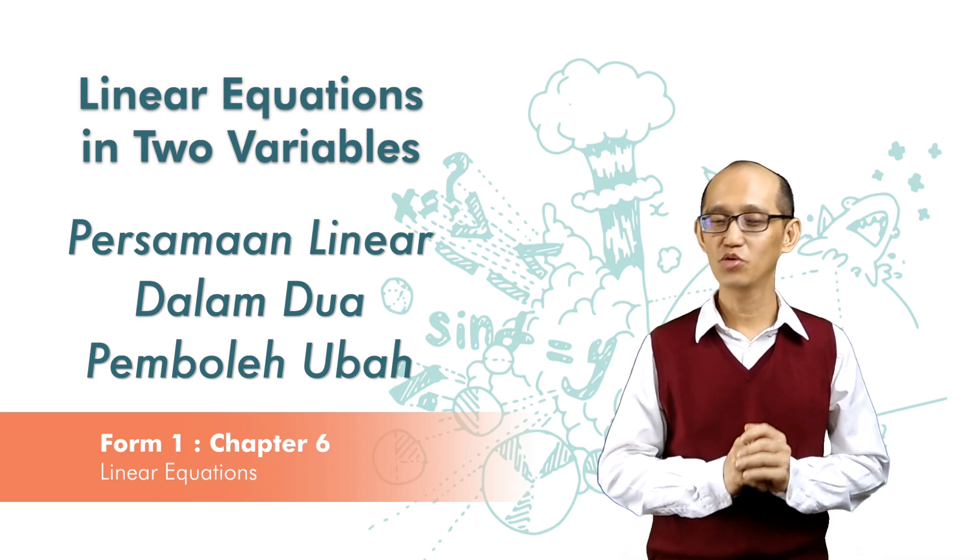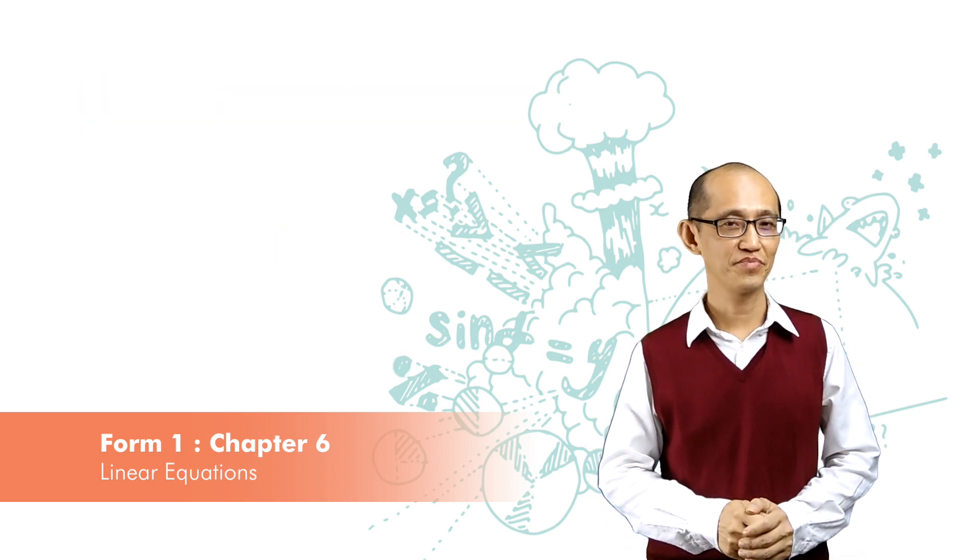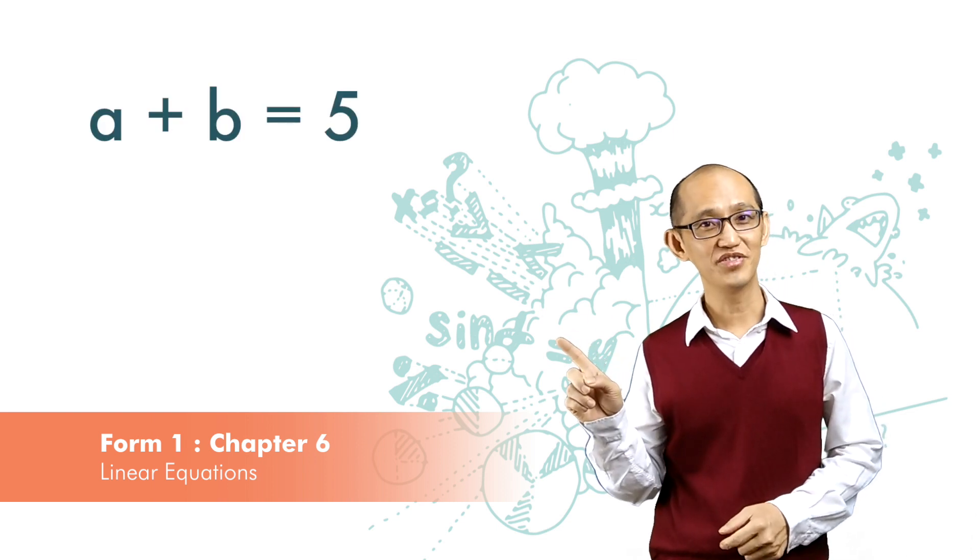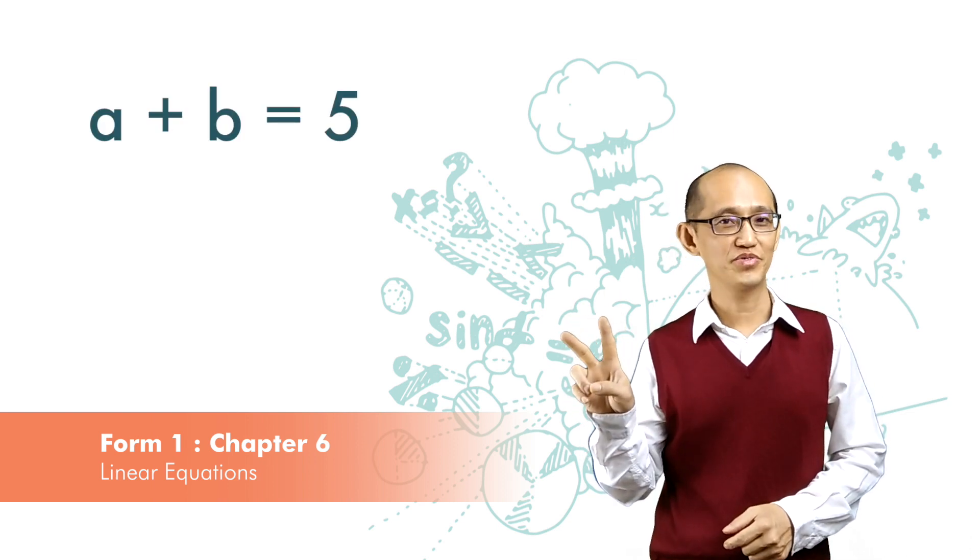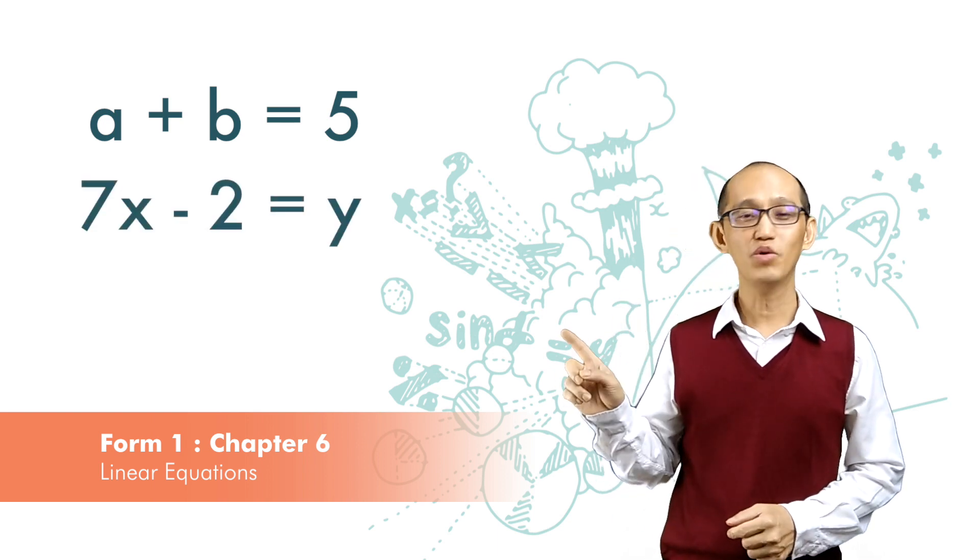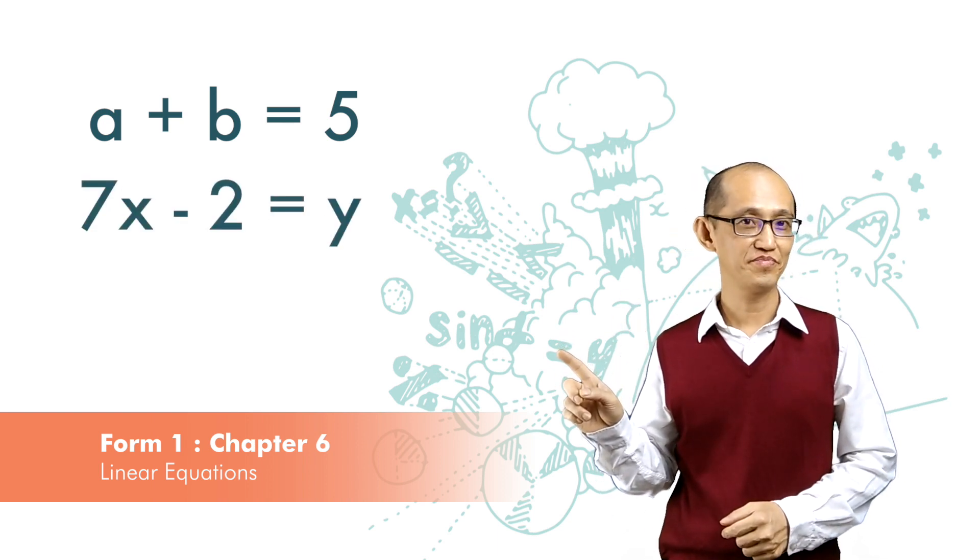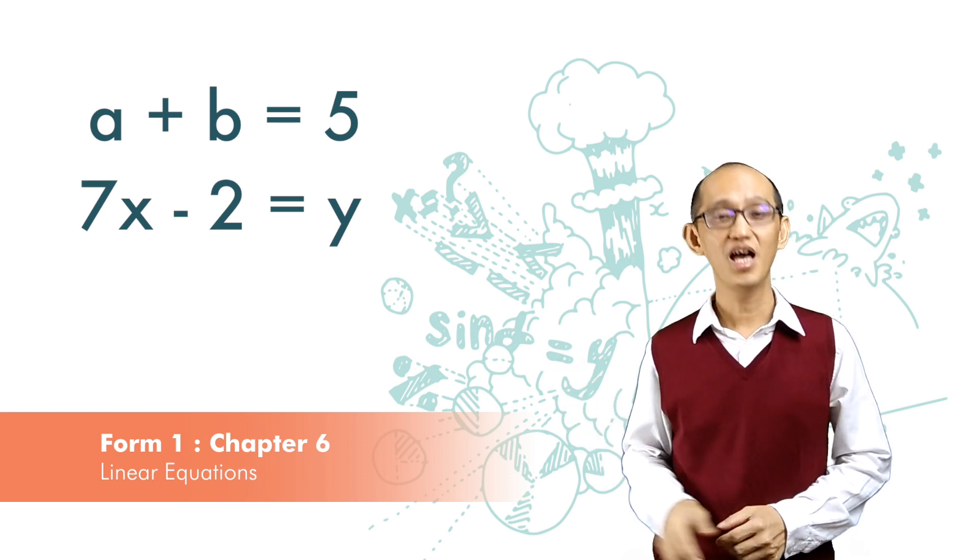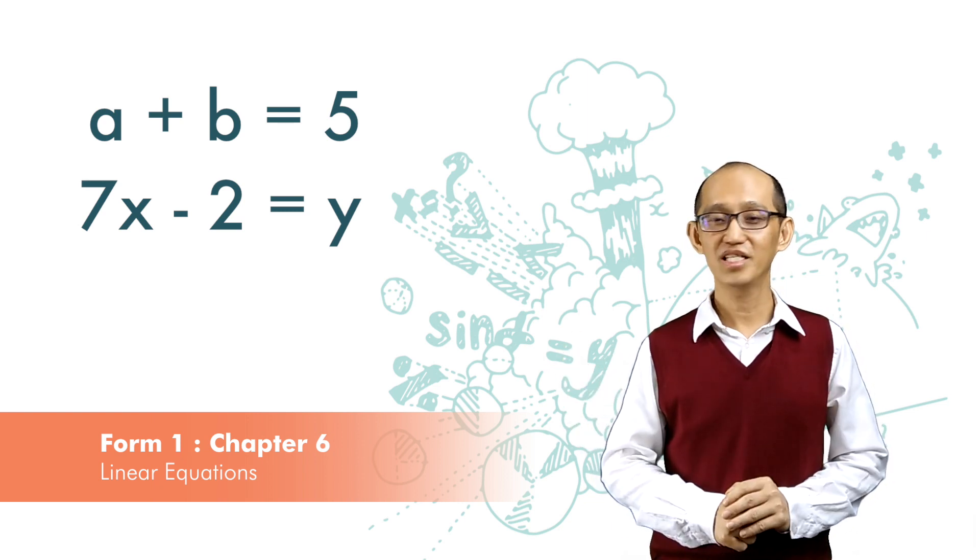So what is a linear equation in two variables? In these equations there are two variables, a and b. This equation also has two variables, x and y. These are linear equations in two variables.